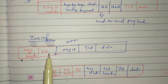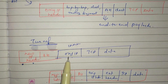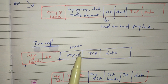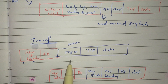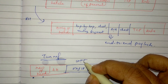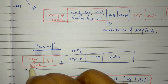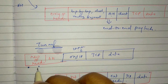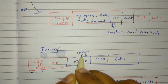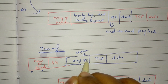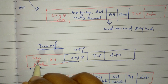This authentication header is inserted in between the new IP header (that is, the outer IP header) and the original (that is, the inner IP header). The inner IP header contains the destination address, while the outer IP header contains the firewall address or security gateway address.